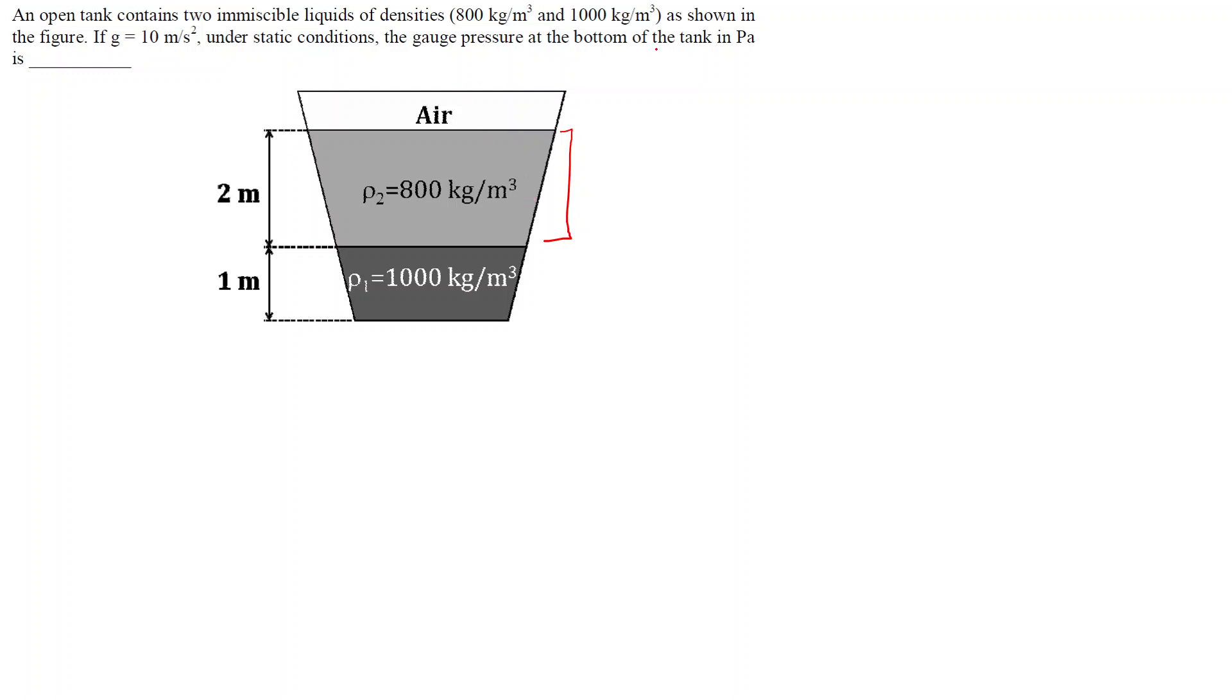In order to find the gauge pressure, gauge pressure we define it as Pɢ = P_absolute - P_atm. This is how we define the gauge pressure. We have to find the gauge pressure at the bottom of the tank. For that, what we can do is we can find the absolute pressure and then just subtract it from the atmospheric pressure and then we will have the gauge pressure.